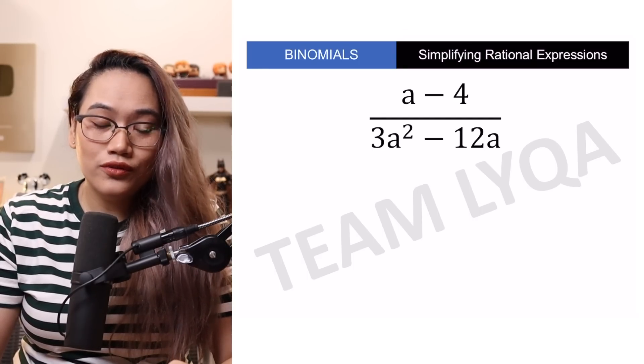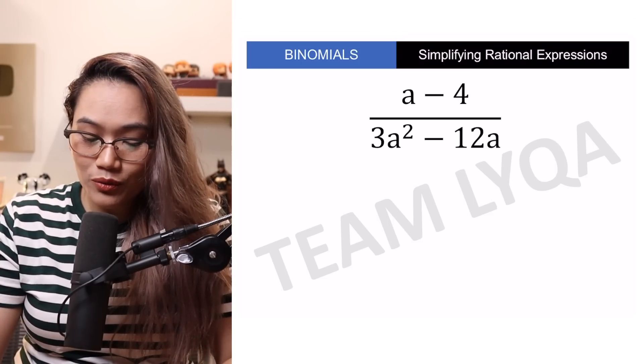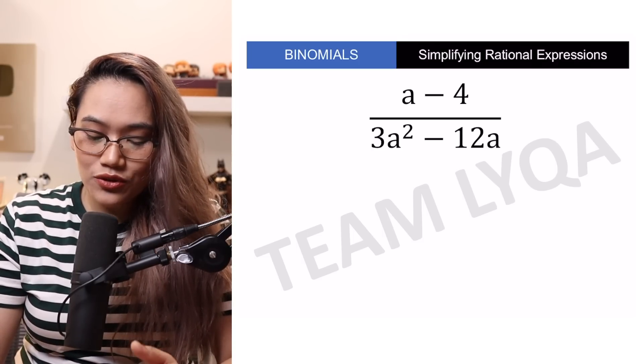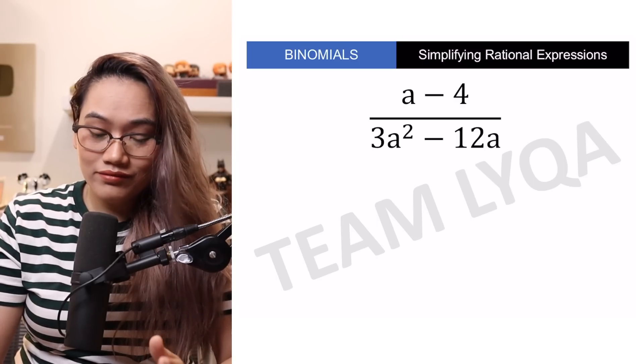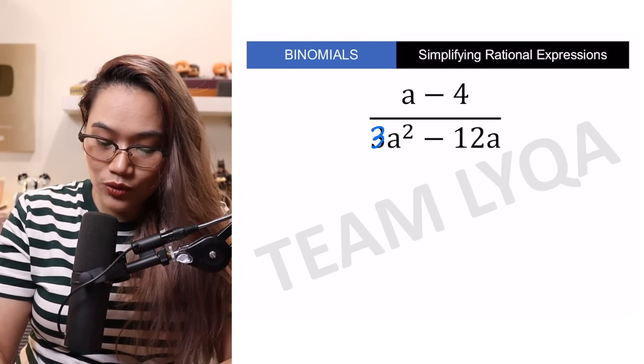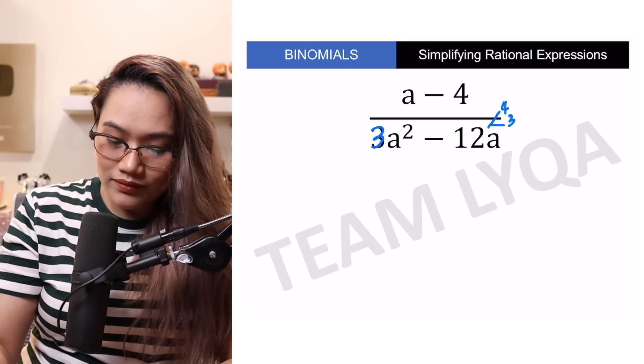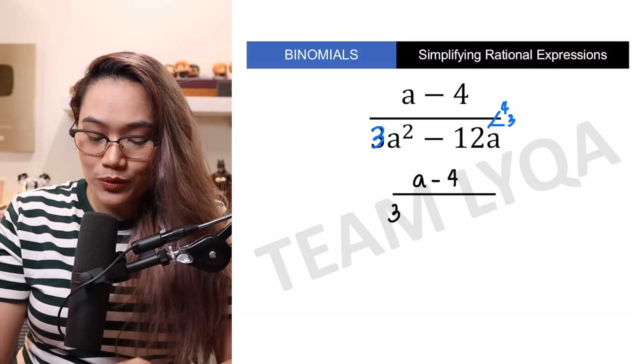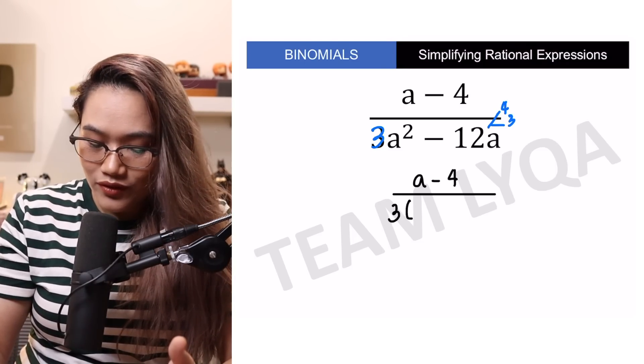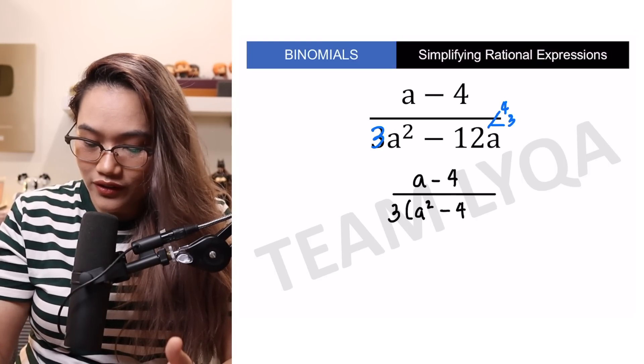Ito ay A minus 4 all over 3A squared minus 12A. In this case, yung A minus 4 wala na tayong magagawa dyan kasi wala na silang shared na factor. Pero yung ilalim, meron kang 3A squared minus 12A, una kong ihihiwalay would be yung 3. Kasi yung 3 na yan, ay pwede kong kunin dun sa 12 kasi yung 12 ay 4 times 3 rin. Which means, pwede kong isulat sa ilalim yung 3. This is the point where your teacher would say tapos next tititinam mo yung A. Pero para lang mas visual, ihiwalay natin yung pagkakasulat. You have 3 times A squared minus 4A.